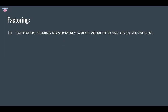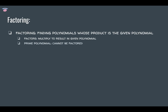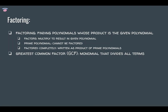Factoring is the opposite of multiplying polynomials — it's finding polynomials whose product is the given polynomial. The factors are the things you multiply to get the given polynomial. A prime polynomial cannot be factored, and factoring completely means writing the polynomial as a product of prime polynomials. The greatest common factor method uses a monomial that divides all terms. For example, 6xy squared plus 8xy minus 12y: there's a y in every term and all coefficients are divisible by 2, so you take out 2y to get 2y(3xy plus 4x minus 6).